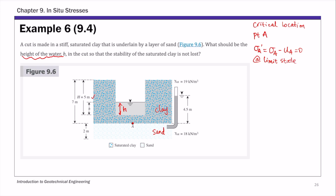This is the equation we're going to use to figure out the height of the water, small h. Let's calculate the total stress sigma A. Total stress sigma A is basically the total weight of soil plus water over the cross-sectional area. That's seven minus five — how much soil is above point A — times the corresponding unit weight, gamma saturated clay. We also need to account for the weight of water: that's small h times unit weight of water. That is the total stress at point A.